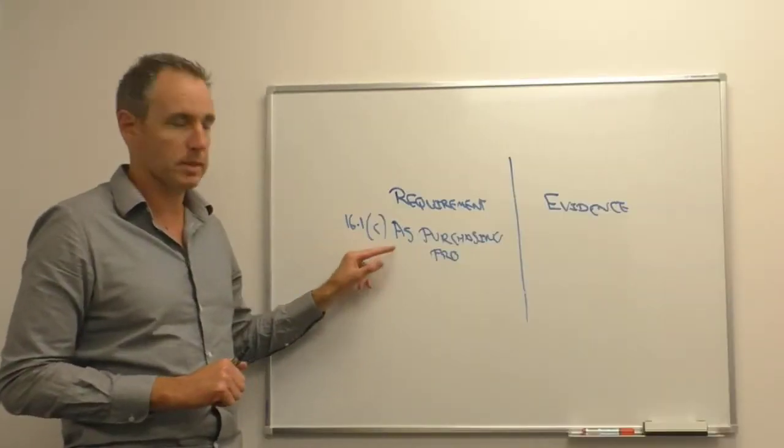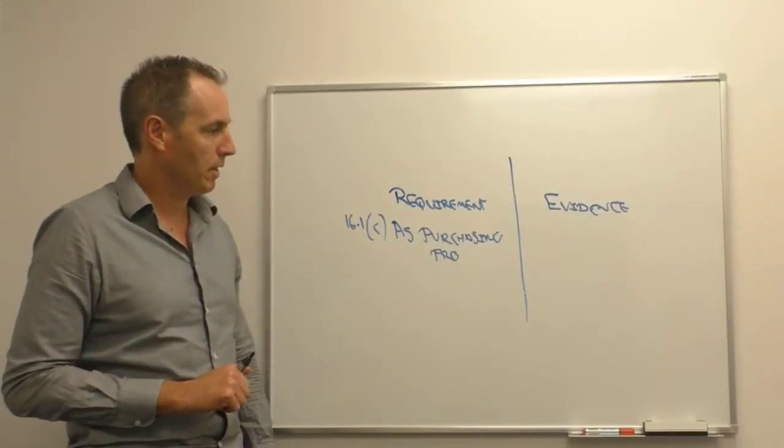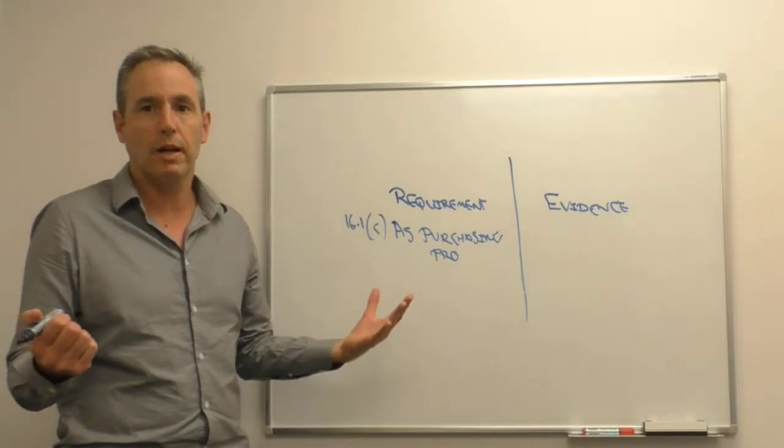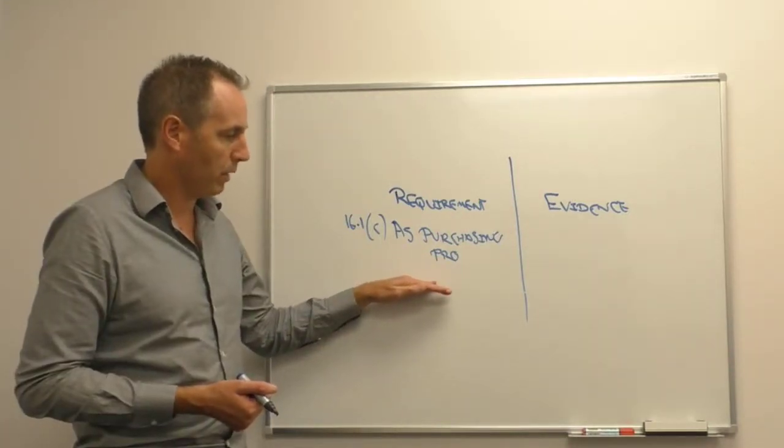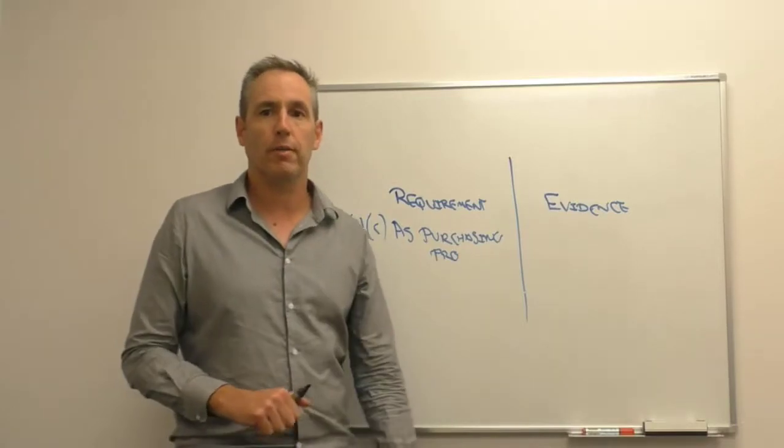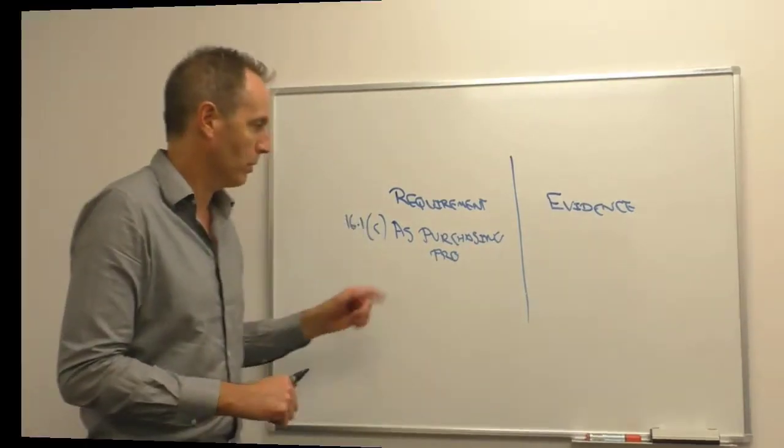If we're not absolutely specific, we might have a 10, 15 page purchasing procedure. The team we've audited will pick it up and they will pick out the wrong clause and start trying to take corrective action on the wrong thing again. That is the risk.